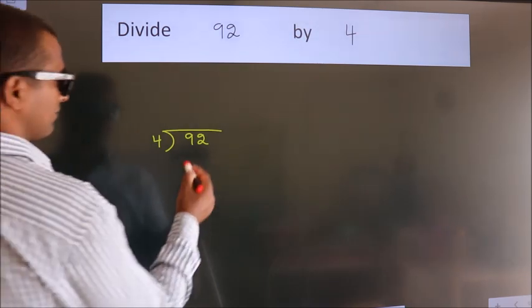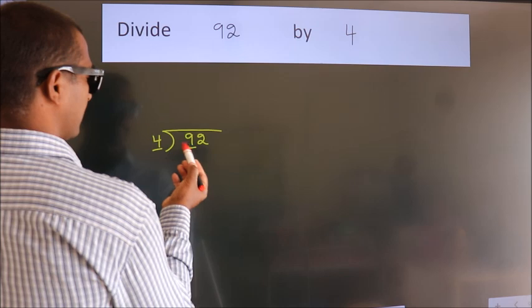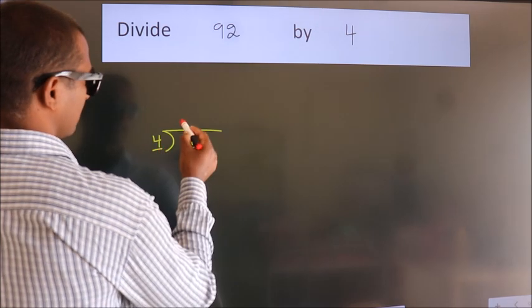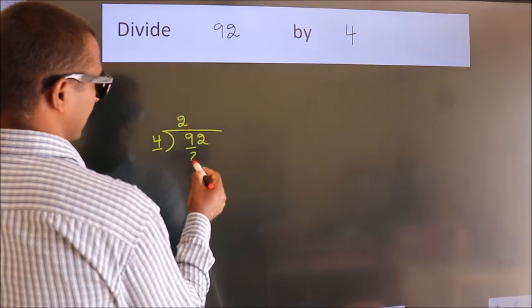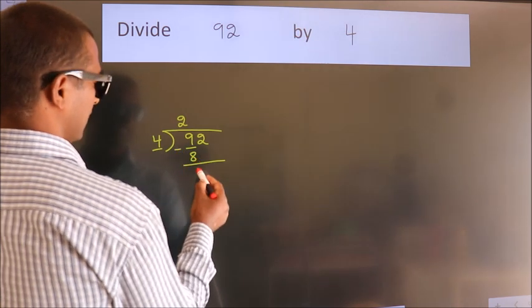Next, here we have 9, here 4. A number close to 9 in 4 table is 4 twos 8. Now, we should subtract. We get 1.